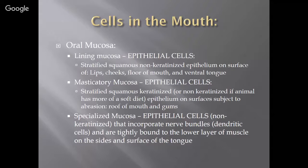These are stratified squamous non-keratinized epithelium on the surface of your lips, cheeks, floor of your mouth, and ventral tongue. When we say stratified squamous non-keratinized, that means there's no keratin within it. Keratin makes up your hair and nails, so there might be some roughness. If you think of your lips, cheeks, floor of your mouth, and ventral tongue, those epithelial cells are non-keratinized — they're smoother.